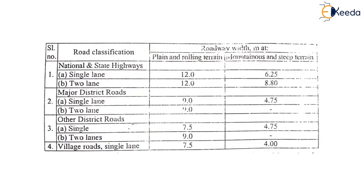The width of roadway for various classes of road is given in this table. For national and state highways, single lane road in plain and rolling terrain requires 12 meter width, and for mountainous and steep terrain 6.25 meter. For two lane roads, 12 meter for plain and rolling terrain and 8.8 meter for mountainous and steep terrain. For major district roads, single lane and two lane roads both require 9 meter for plain and rolling terrain, and 4.75 meter for mountainous and steep terrain. For other district roads, single lane in plain and rolling terrain requires 7.5 meter, and 4.75 meter for mountainous and steep terrain.